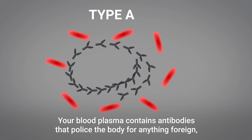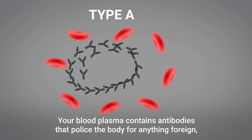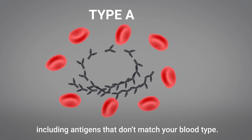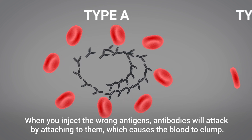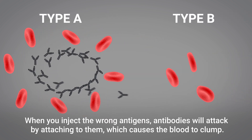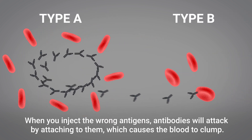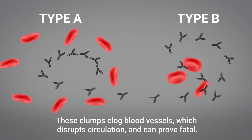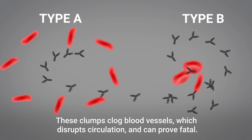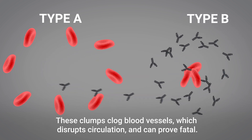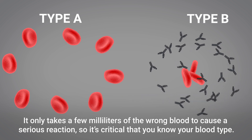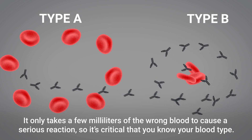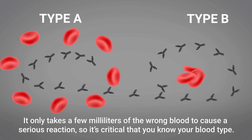Your blood plasma contains antibodies that police the body for anything foreign, including antigens that don't match your blood type. When you inject the wrong antigens, antibodies will attack by attaching to them, which causes the blood to clump. These clumps clog blood vessels, which disrupt circulation and can prove fatal. It only takes a few milliliters of the wrong blood to cause a serious reaction, so it's critical that you know your blood type.